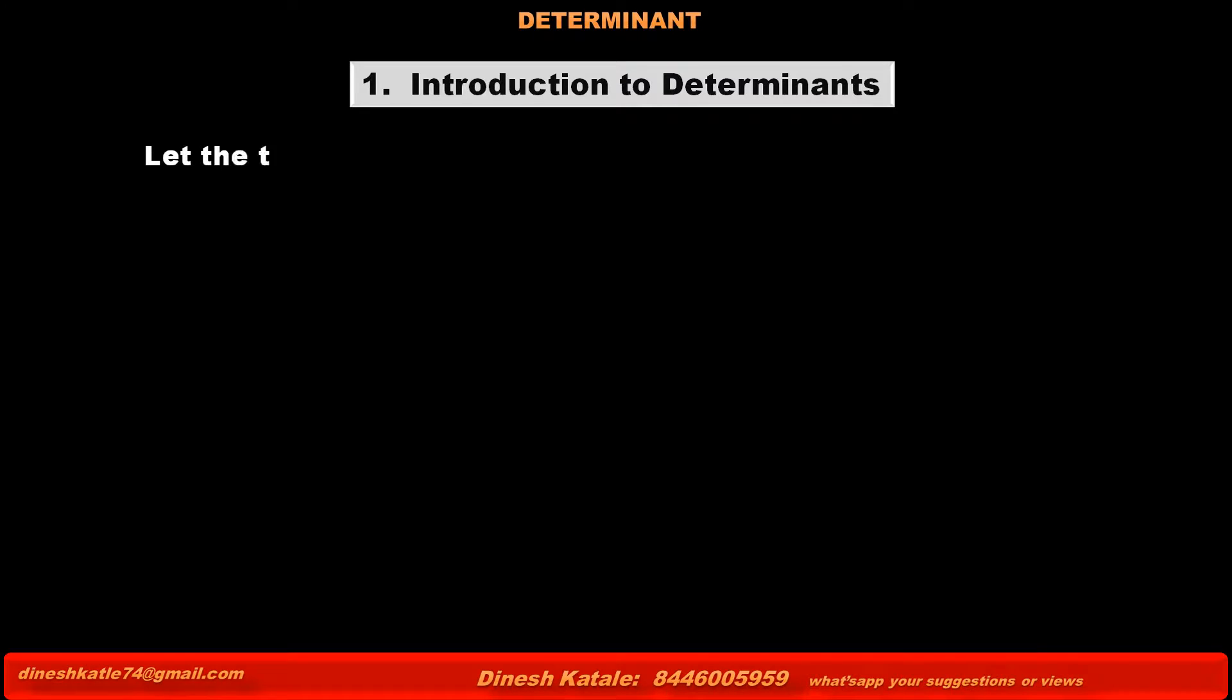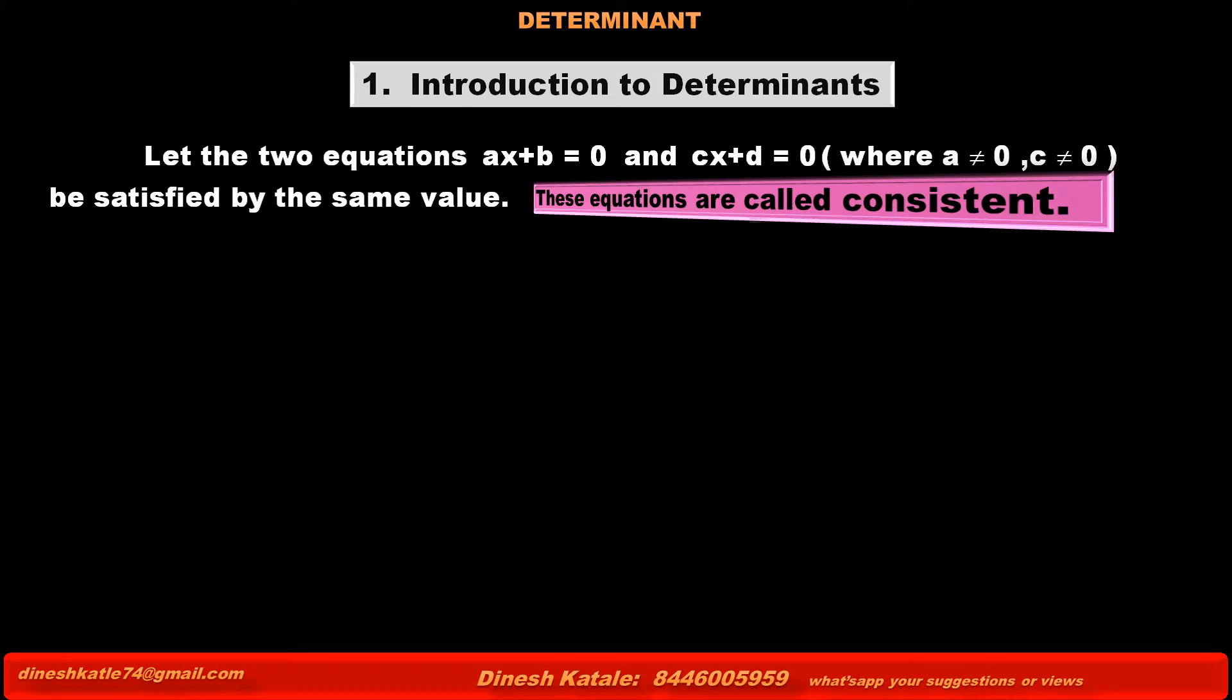Let the two equations ax + b = 0 and cx + d = 0, where a ≠ 0 and c ≠ 0, meaning coefficients of x are non-zero, be satisfied by the same value. That is, these two equations have common solutions. Then, these equations are called consistent.